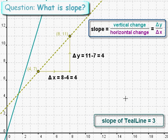So what is the slope of yellow line? Well, the slope of yellow line is delta y over delta x. Delta y is 4, delta x is 4, so the slope is 1.